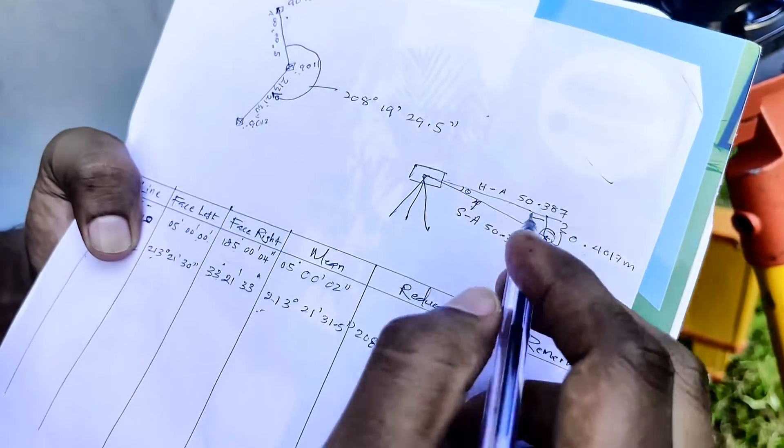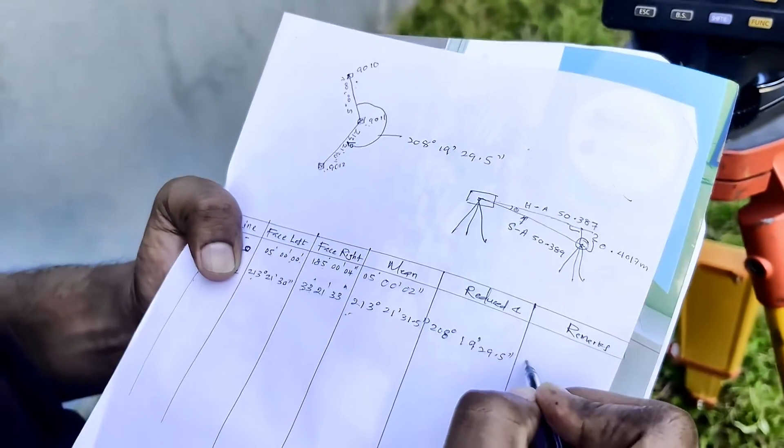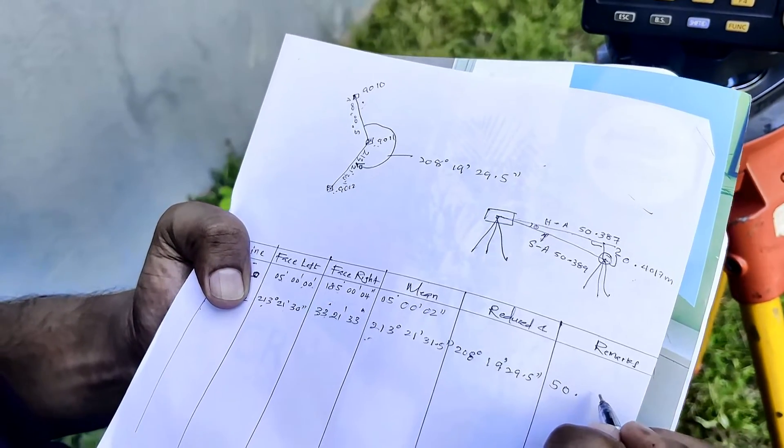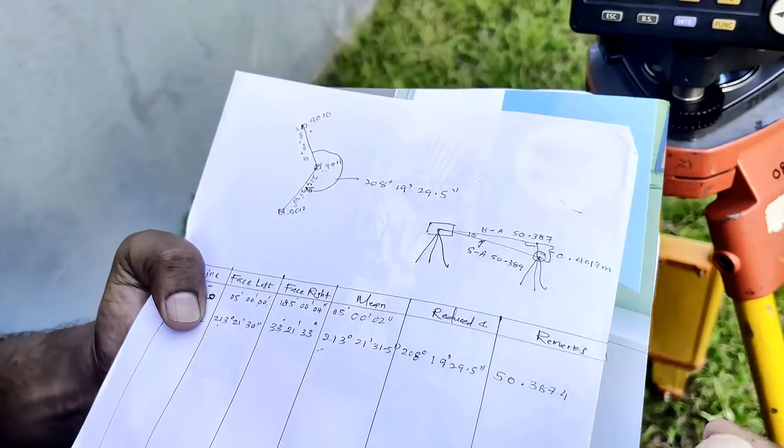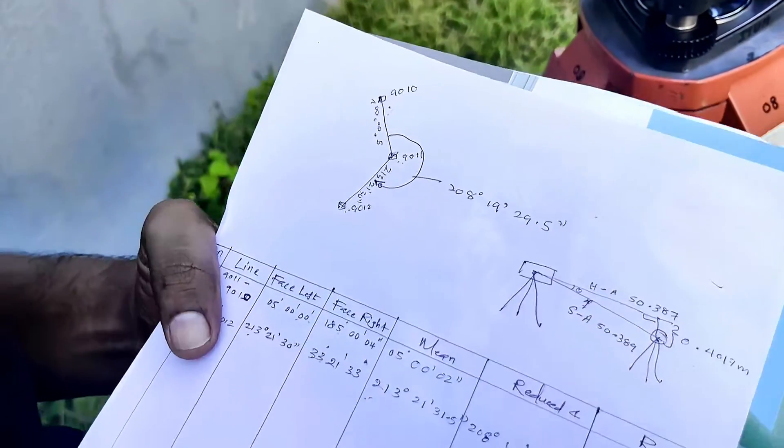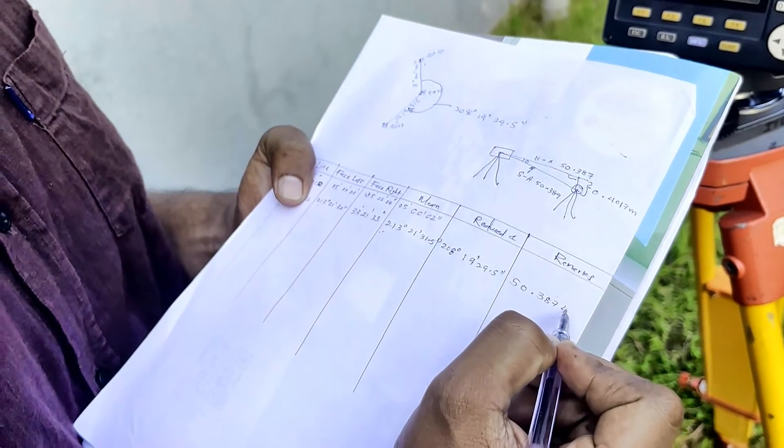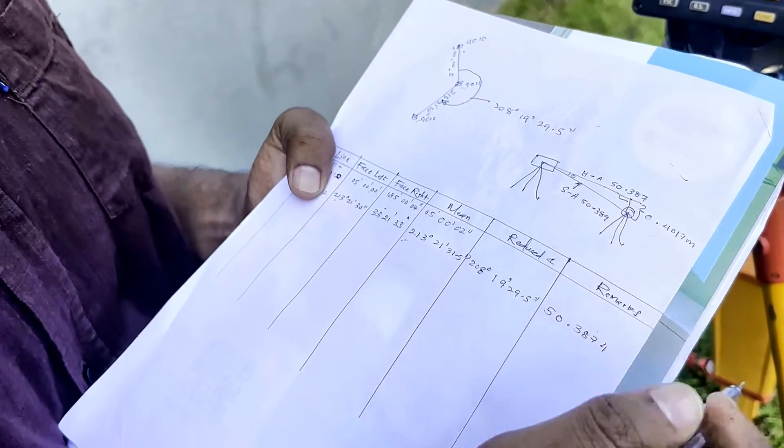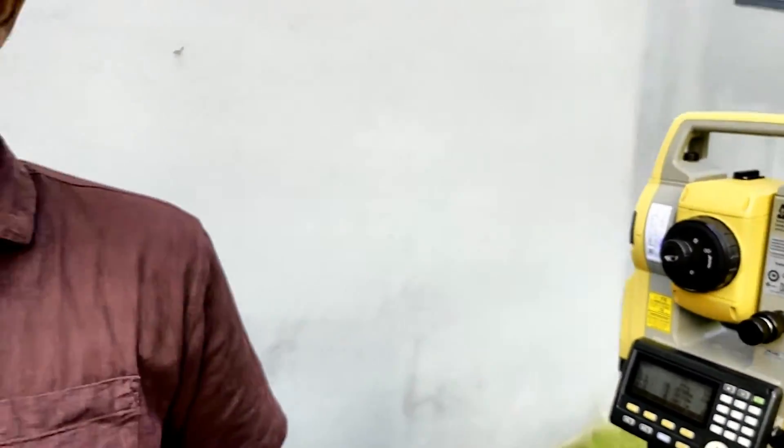But here, for the traversing, we are only going to record this horizontal distance, HA, 50.387 meters. Here, we get it up to 4th decimal place. But in settings, we can change it. So, it is better to round off it to the 3rd decimal point. So, that is how we do the traversing. Now, today, now you learned how to do the traversing.